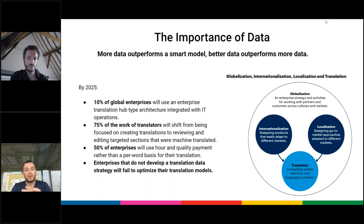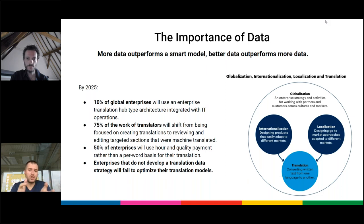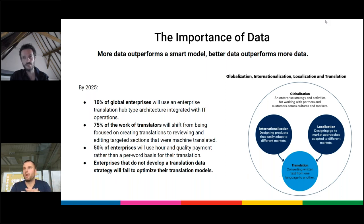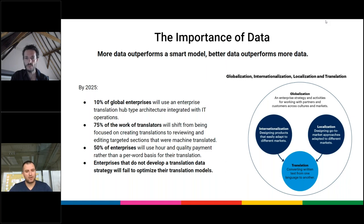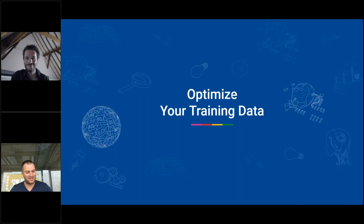Gartner also estimates that 50% of enterprises will use per-hour rates instead of per-word rates. Enterprises who don't follow these optimizations will fail to optimize their translation models. Where data comes in is that to build these integrated hubs, domain-specific data is needed. If there is not enough data for a specific language, TAUS can help there — and from a translator's perspective, TAUS will help by providing domain-specific datasets to support good models that won't need a lot of review, making the review process quite efficient.